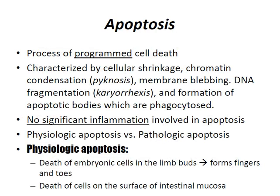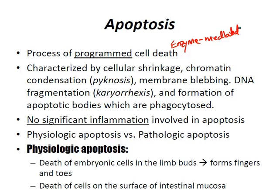Now let's talk about apoptosis. Apoptosis is the process of programmed cellular death — it's enzyme-mediated. It occurs when the persistence of a cell would be disadvantageous to the body, such as regression of embryonic structures, destruction of lymphocytes in the thymus, and destruction of viral-infected or cancerous cells. It's characterized by cellular shrinkage, chromatin condensation (pyknosis), membrane blebbing, DNA fragmentation (karyorrhexis), and formation of apoptotic bodies which are phagocytized.